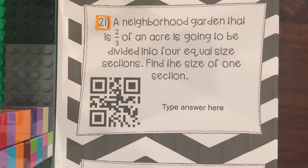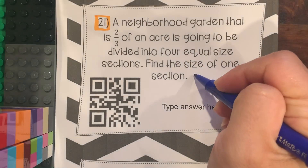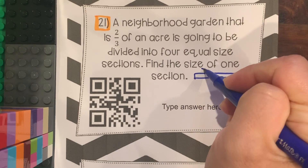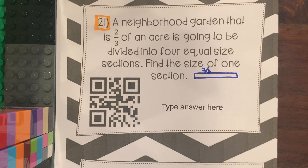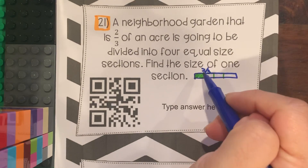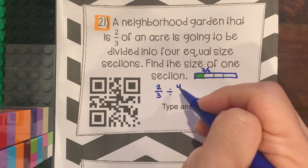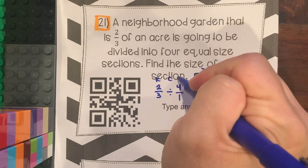Number 21: A neighborhood garden is 2/3 of an acre and is going to be divided into 4 equal-size sections. Find the size of one section. You have 2/3 of an acre and you divide it into 4 equal sections. So take 2/3 and divide by 4, or 4 over 1. Remember to do KCF.